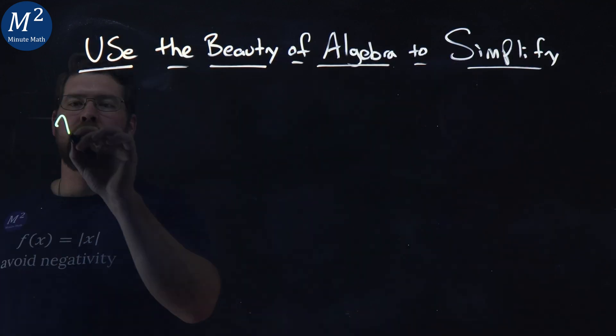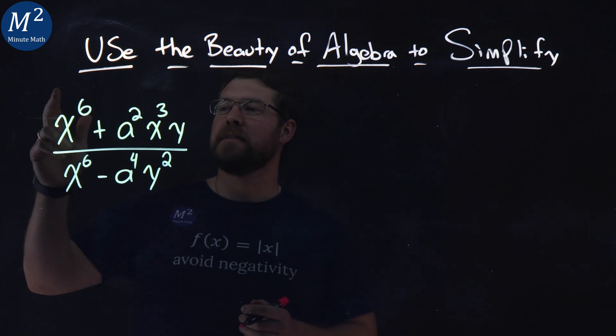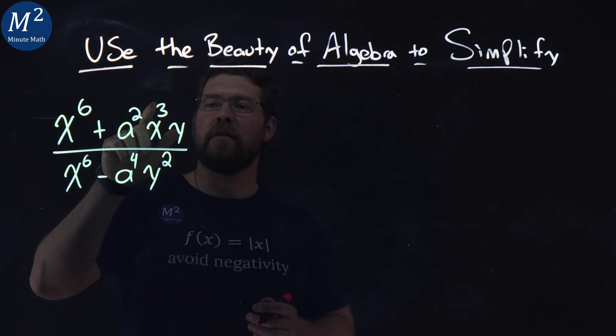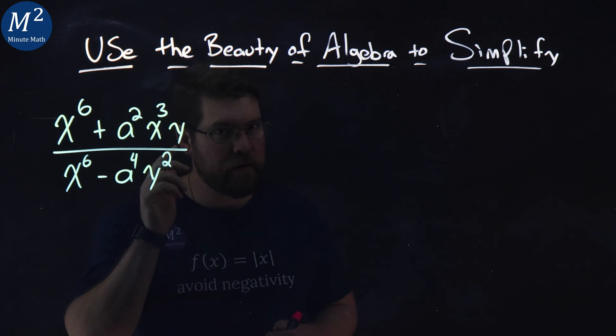Use the beauty of algebra to simplify. Our problem is x to the sixth plus a squared x to the third y over x to the sixth minus a to the fourth y squared.